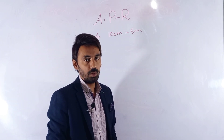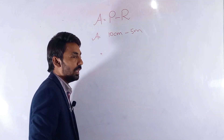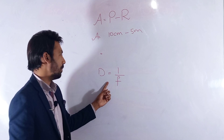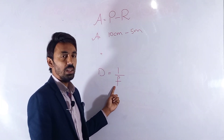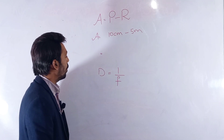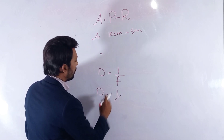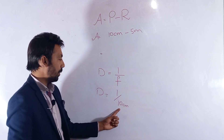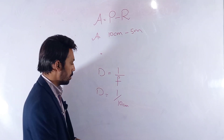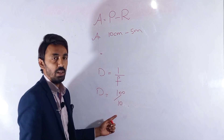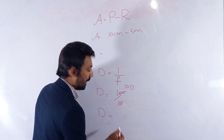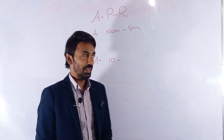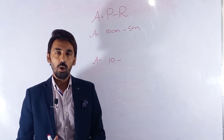To convert to diopters we use the formula D equals 1 over f, where f is the distance. For the near point, f is 10 centimeters, which we convert to meters: 100 over 10. So the near point in diopters is 10 diopters.